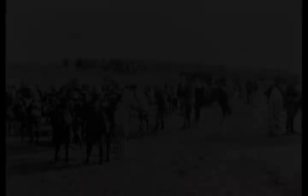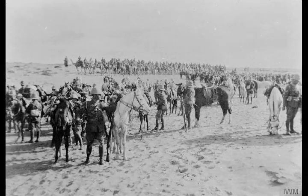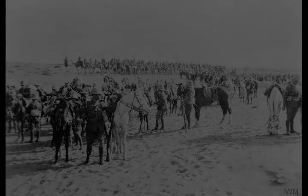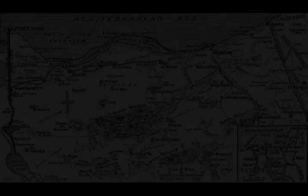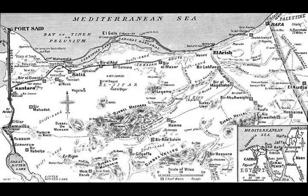The first hostilities occurred on 20 November when a twenty-man patrol of the Bikaner Camel Corps was attacked at Beer-en-Nus, 20 miles east of Kontar, by 200 Bedouin. The Bikaner Camel Corps lost more than half their patrol.